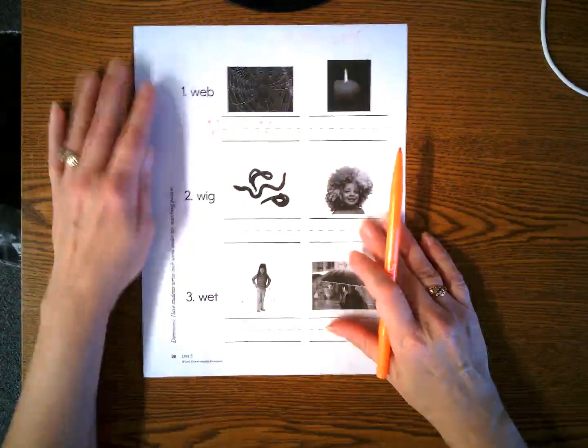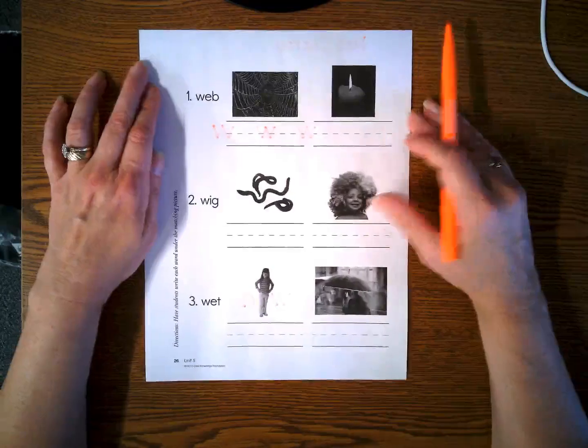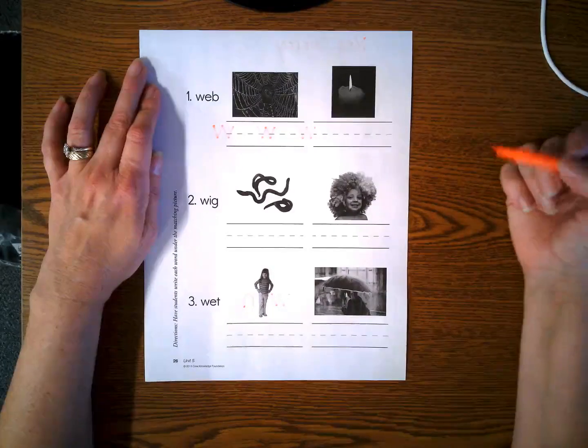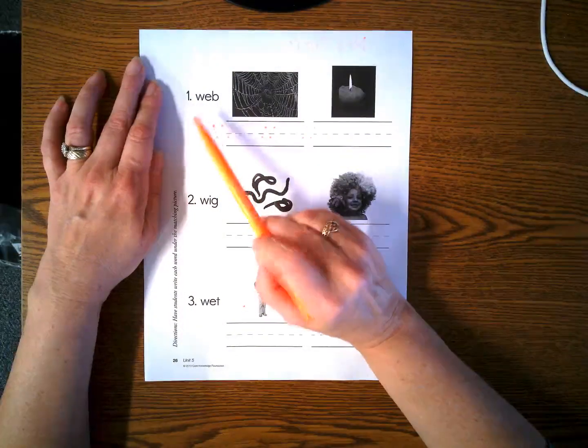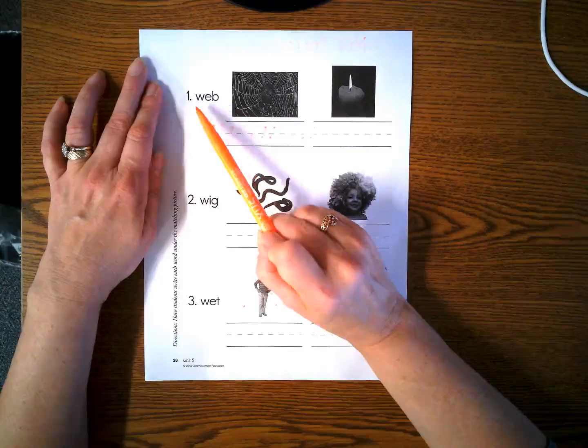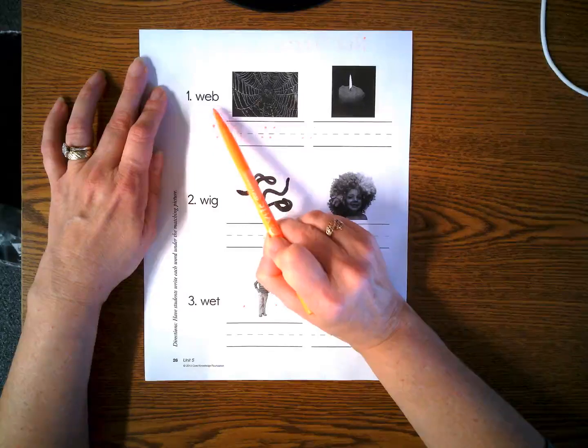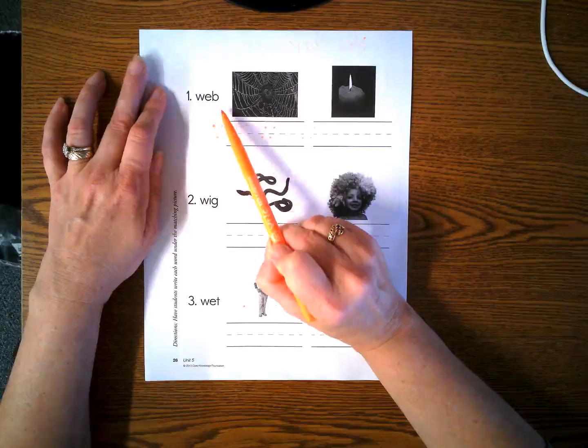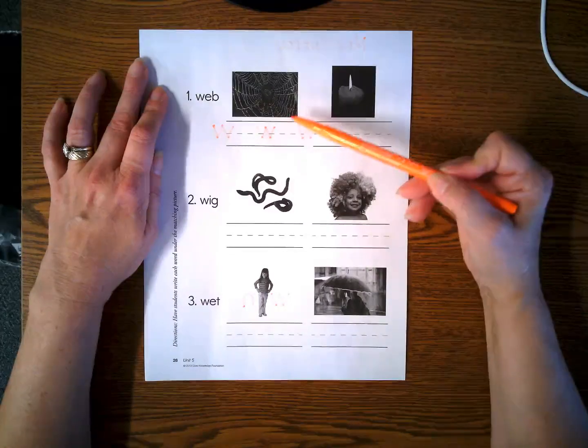And we're gonna turn the paper over. And let's do this together. We're gonna stretch the word and see which picture we write under. This number one. W, e, b. Web. Which picture is a web? This looks like a web to me.